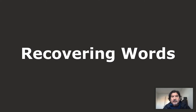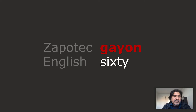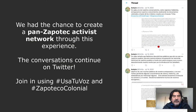I want to talk briefly about how the conversatorios helped me to recover some words that have been lost in my community. One area of enormous impact was using the colonial Zapotec language materials to recover, find, and confirm some words like the words for 60 or 80. As a child, I used to listen to these words from my grandmother, but as an adult I wasn't really sure if they were real. But looking at the colonial documents, I was able to confirm them. We now have the Zapotec word for 60, which is Qayon, and TAF for 80. Creating a community among other Zapotec language activists is very personal and meaningful, as this work is sometimes very lonely. We had a chance to create a pan-Zapotec activist network through this experience, not just in Oaxaca, but across the border, especially in California. The conversation continues on Twitter — you can use the hashtags #usatuboz and #zapotecocolonial.